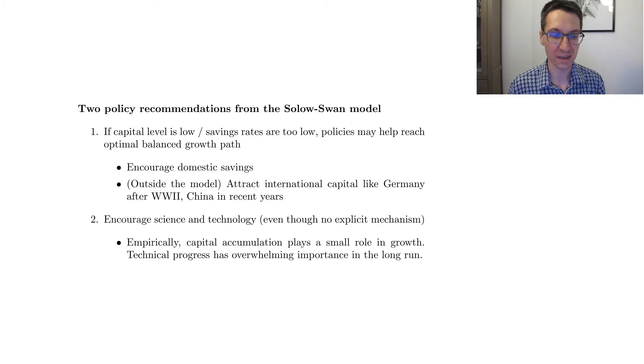Or possibly, this is outside the model, but we know that bringing outside capital such as Germany or Japan after World War II or China in recent years may be extremely helpful in generating growth. Also, we just saw how science and technology play a huge role, even though the Solow model doesn't have an explicit mechanism. So empirically capital accumulation has basically a small role or accompanying role and technical progress and the way to generate it has a huge importance in the long run. So that's it for Solow model. I hope this was helpful and clear.